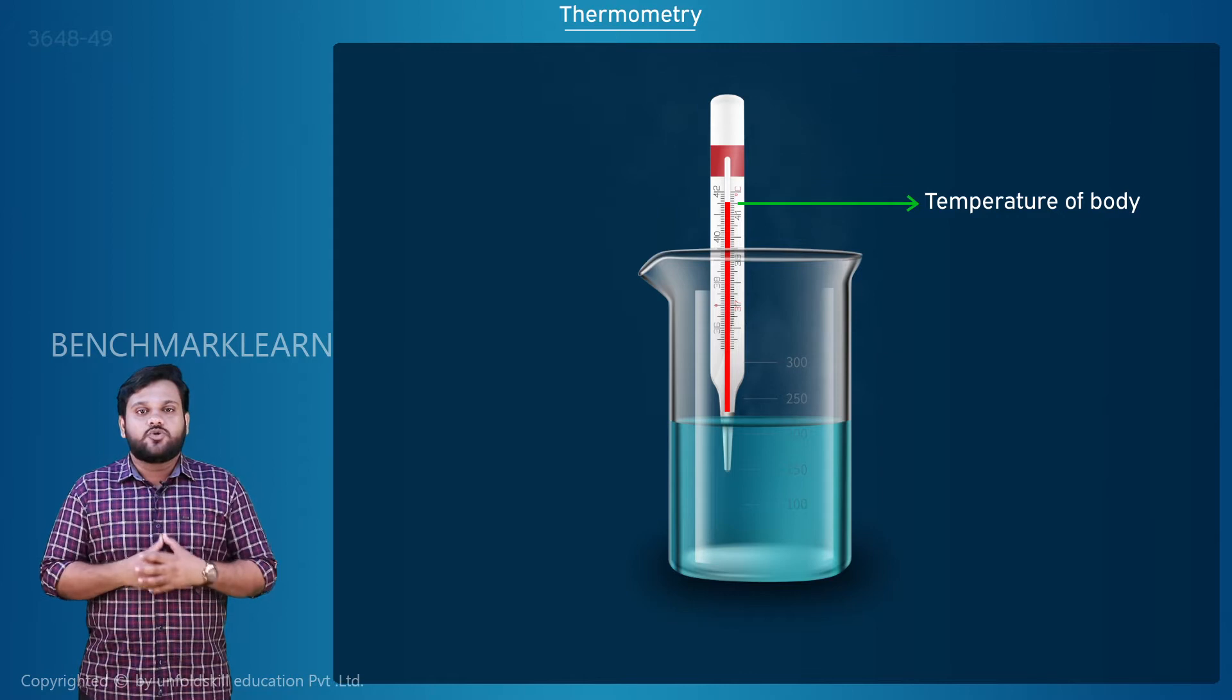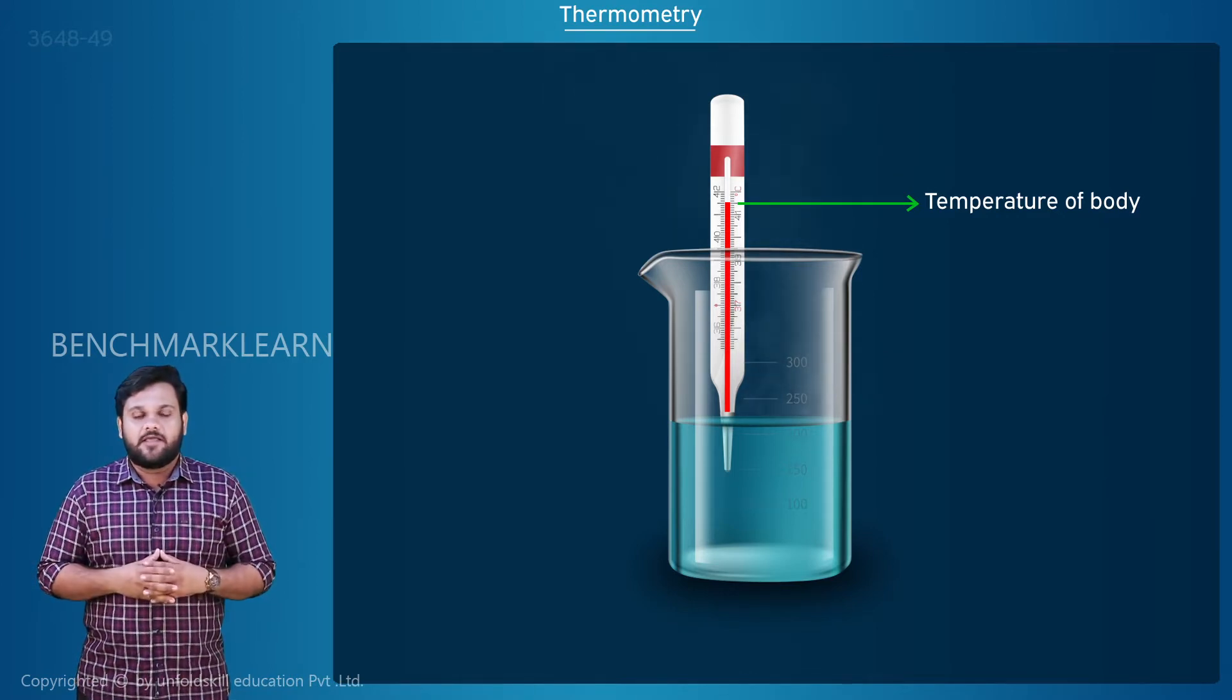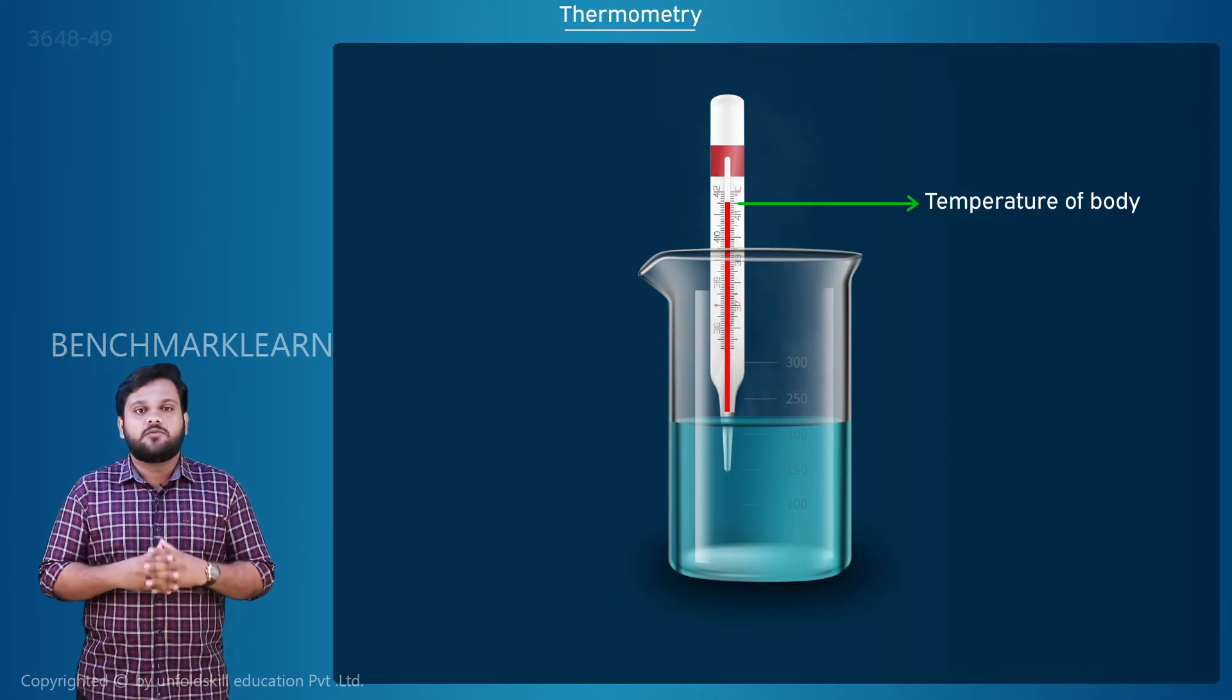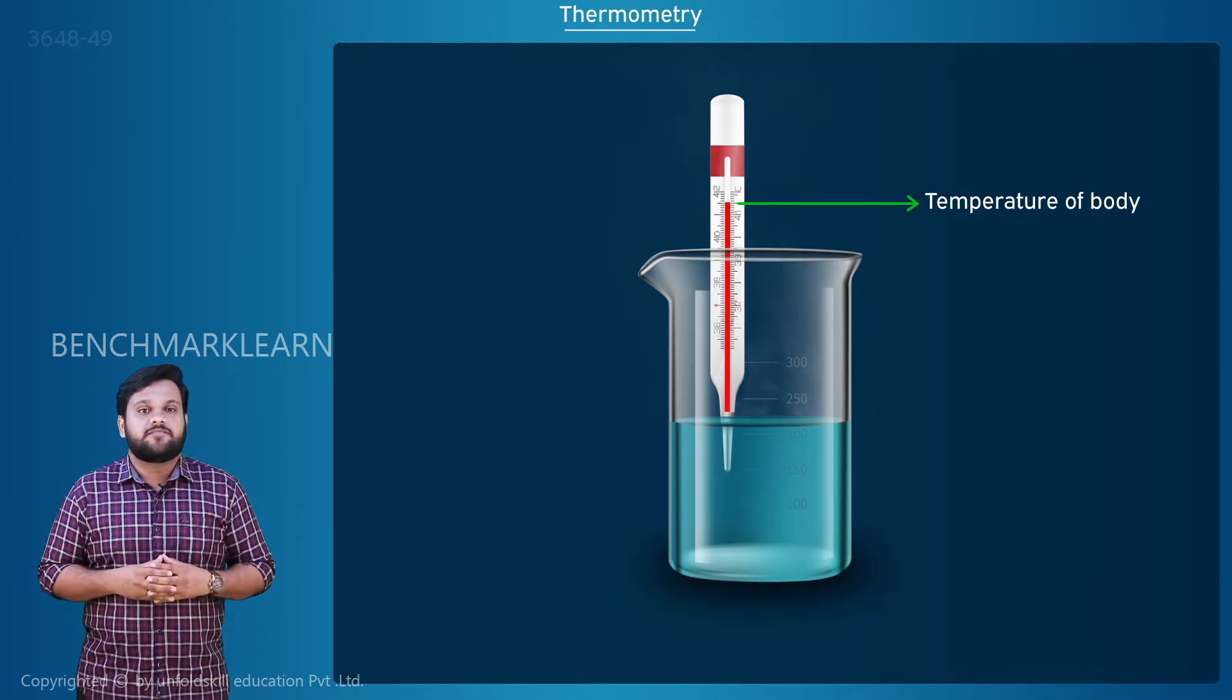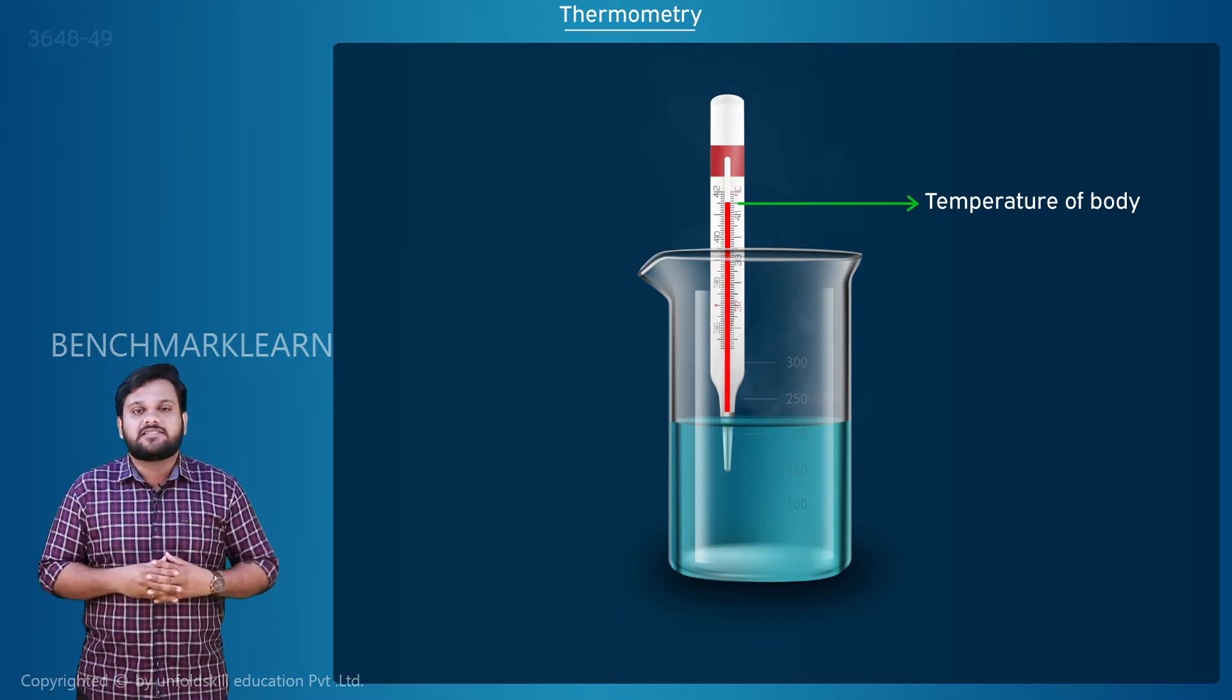Mercury is in a glass tube and the increase in volume can be easily measured. We can mark these volume measurements on the thermometer for any temperature and we can use this value of volume of mercury to represent the temperature of the body.